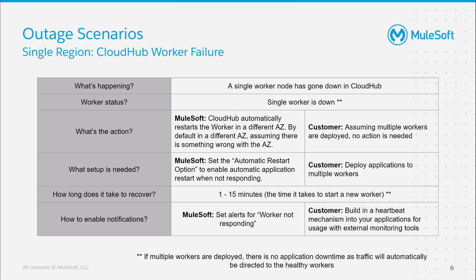If we look at who needs to act in this scenario, MuleSoft is the only player that needs to do anything — this is handled automatically and the customer does not need to do anything. MuleSoft will automatically restart applications in a healthy availability zone other than where the other workers are deployed. To ensure applications automatically restart on failure, the Automatic restart on failure option must be selected in Runtime Manager — by default, this option is automatically selected for all applications. It is important to note that in order for there to be zero downtime, the application must be deployed on more than one worker. The time to recover a downed worker is essentially the time it takes to spin up a new EC2 instance, which can take anywhere from 1 to 15 minutes.